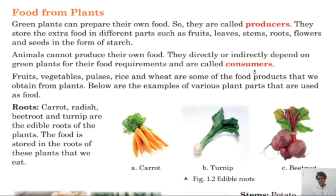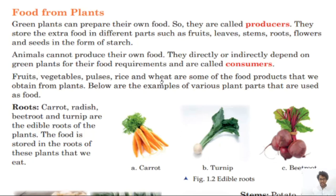Fruits, vegetables, pulses, rice, and wheat are some of the food products we obtain from plants. We eat fruits, vegetables, pulses, rice, and wheat — so since we don't produce our own food, we are called consumers. Below are examples of various plant parts that are used as food.